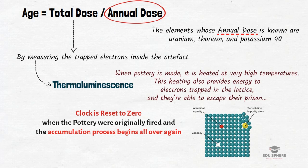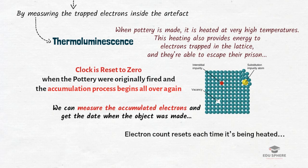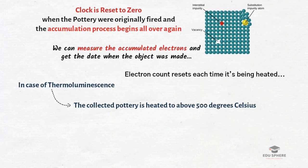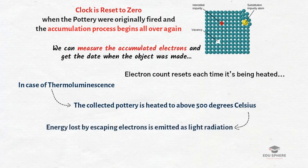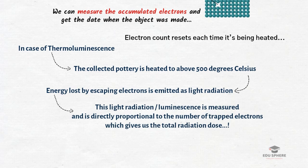If the pot was fired and then used only for cold storage — never exposed to high heat again — we can measure accumulated electrons to get the date it was made. But if it was used for cooking, the electron count resets each time it is heated, so we get the date of its last use instead. In the lab, collected pottery is heated to 500°C or above; the energy released by escaping electrons is emitted as light, and this luminescence is measured to determine the total radiation dose, which is then plugged into the equation to get the age.